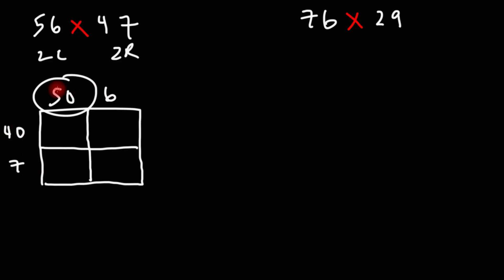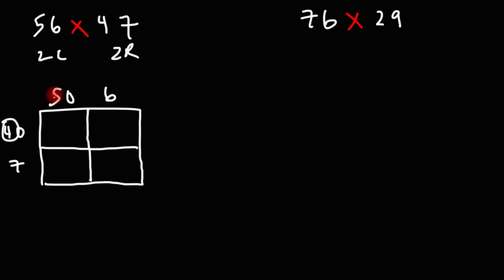Now let's multiply 50 by 40. What's 50 times 40? Here's how you can do that: 4 times 5 is 20, and then just add two zeroes. That's going to be 2,000.